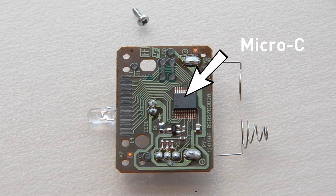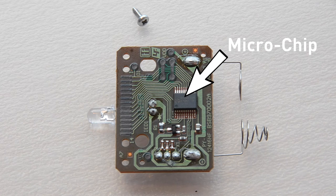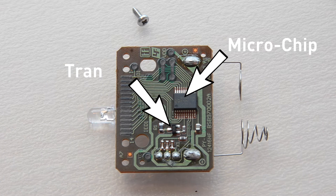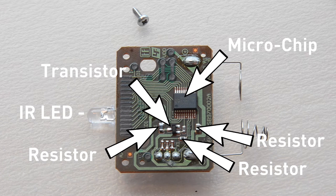The main microchip is packaged in what is known as a 20-pin dual inline package, or a DIP. Next to it, you will also find a transistor, several resistors, and of course, the IR emitting diode.